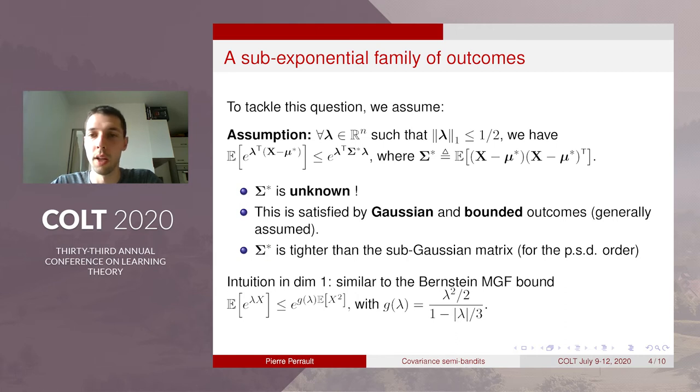So for this we assume the following sub-exponential type assumption on the outcomes. And you can see this is actually a bound on the MGF that has the covariance appearing there.